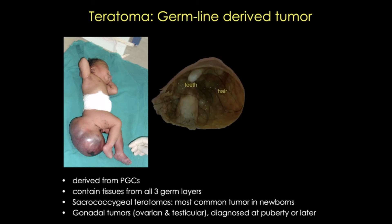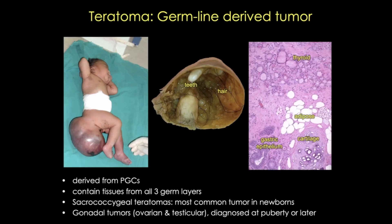This one seen here contains teeth and hair, while this H&E stained section of a teratoma shows tissues derived from the three germ layers: from endoderm — that's the gastric epithelium and the thyroid — mesoderm — cartilage and adipose tissue — and there's also glandular tissue and primitive nervous tissue that arises from ectoderm.